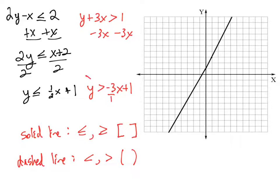So back to graphing this inequality. So the slope is negative 3 over 1, I have a y-intercept of 1. So I'm going to go through 1, I'm going to go down 3, right 1, and then what we're going to do is we're going to have a dashed line.